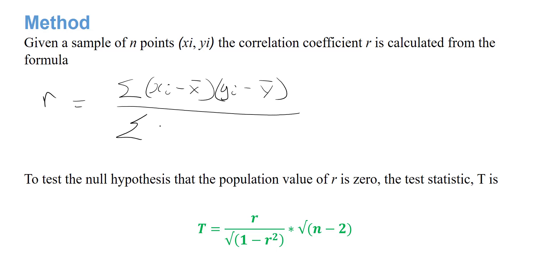...the summation of (xi minus x bar) squared times the summation of (yi minus y bar) squared, and then we square root all of this, so we raise it to the power of a half.